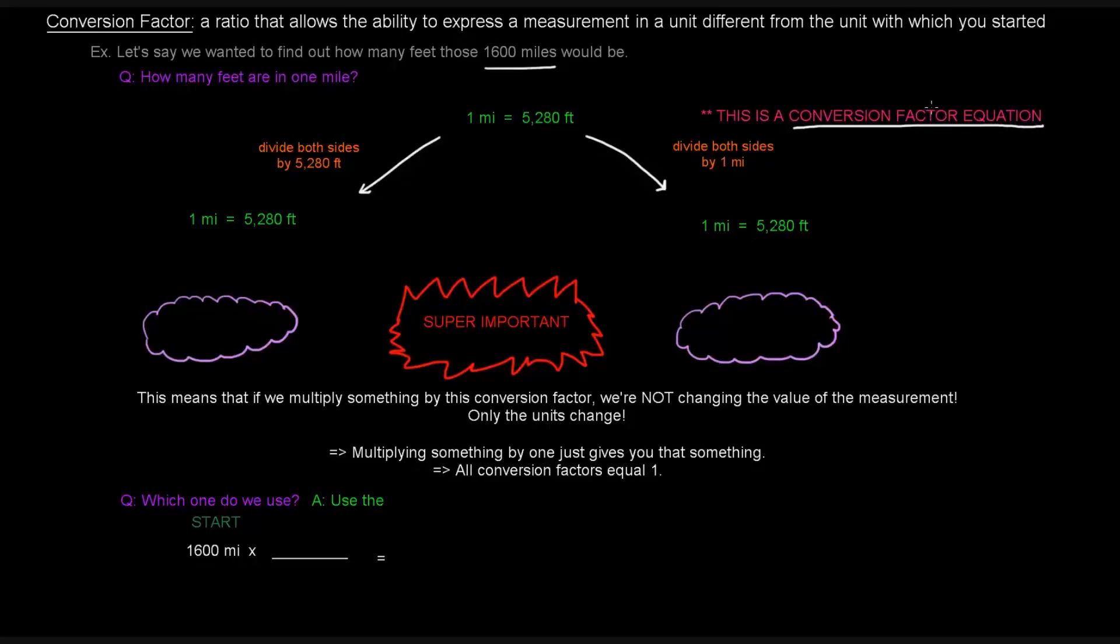We're going to turn this into a conversion factor. First, divide both sides by 5,280 feet. So one mile divided by 5,280 feet equals 5,280 feet divided by 5,280 feet. On the right side, the 5,280 feet cancel. The number cancels and the unit cancels. We just get one over one, which is one. So now we have one mile over 5,280 feet equals one.